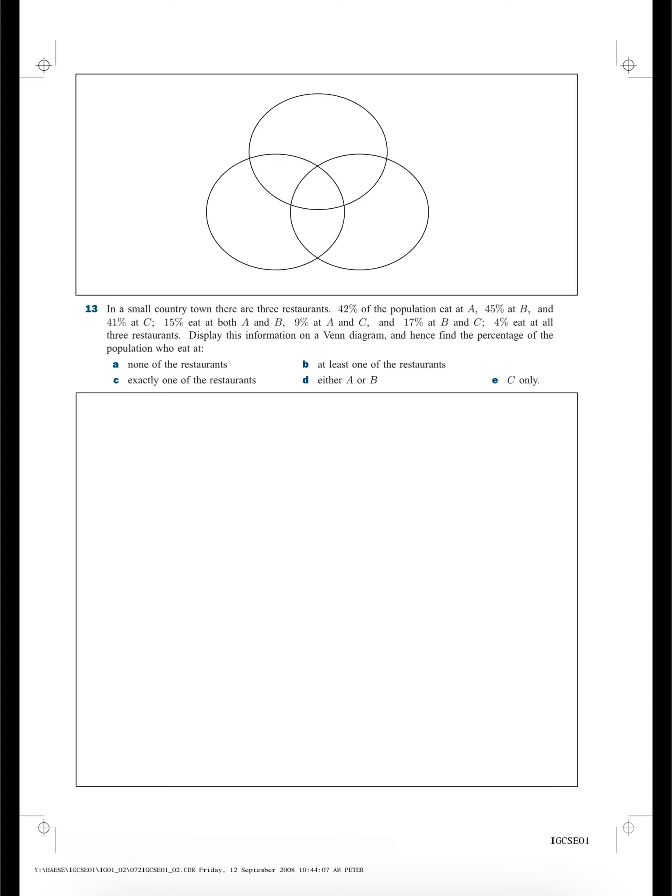We've got ourselves the above Venn diagram here. We need to label it. We need three circles because we've got three restaurants. So we'll call this one here A, B, and C. Now they've told us a lot of information already, and the first thing that's important is the fact that we know that 4% eat at all three restaurants. So we can put the four immediately in the middle.